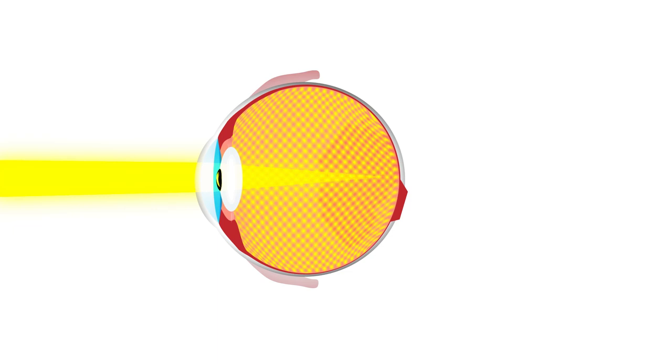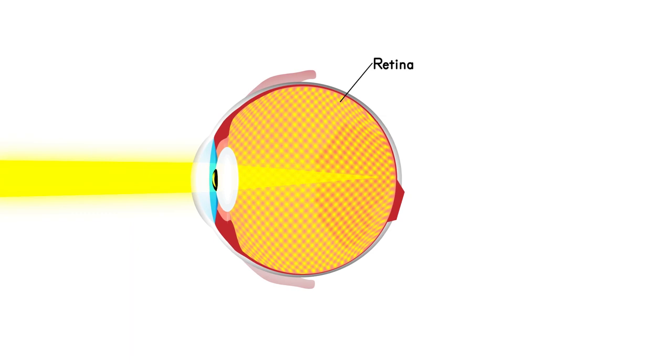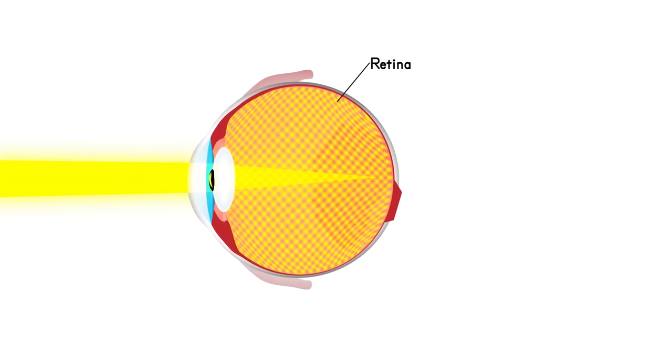On the back wall of your eye is a layer of nerves called the retina. The retina senses light with special cells called photoreceptors.